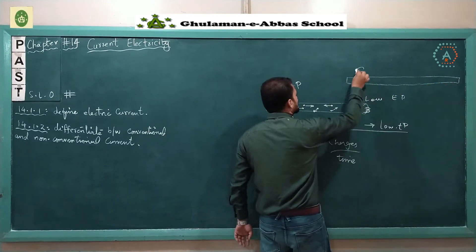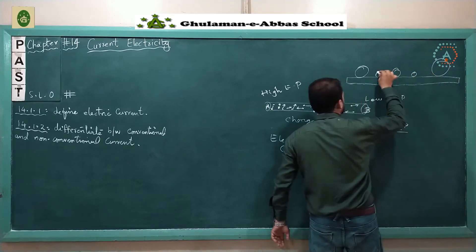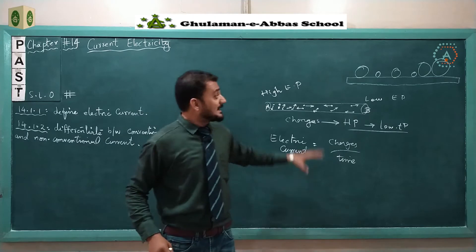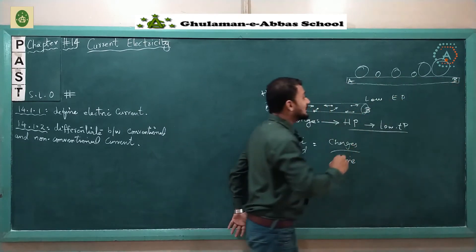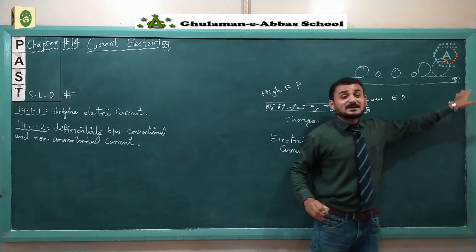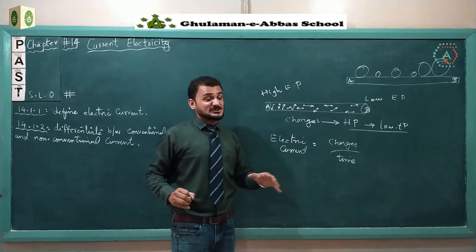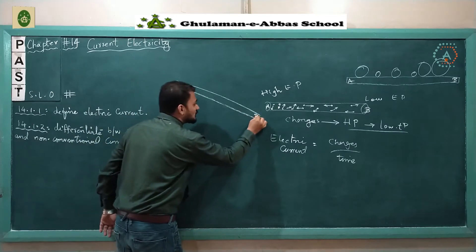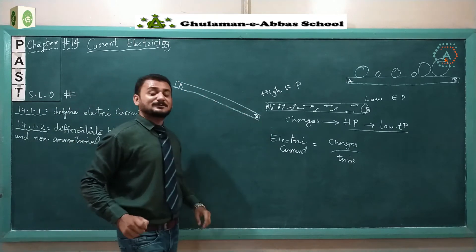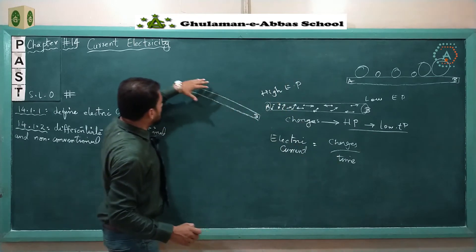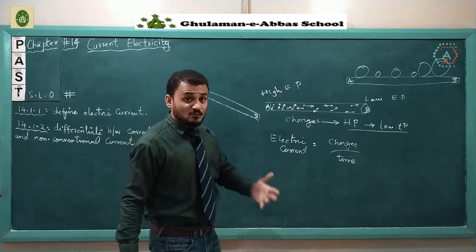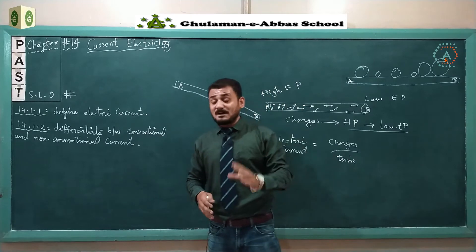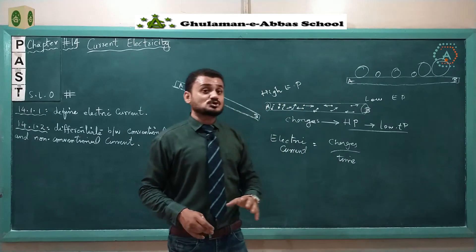As an example, imagine a flat surface with several balls that are all moving in random directions — there is no net flow. Now if we incline the surface so that point A is at high gravitational potential and point B is at low gravitational potential, all the balls will move from the high gravitational potential to the low gravitational potential. Similarly, free charges in a conductor move randomly until we connect a battery, which is a source of EMF, as we will learn in the next lecture.